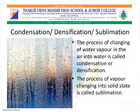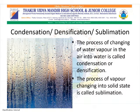Now, sublimation. The process of vapor changing into solid state is called sublimation. It involves direct vaporization and condensation of a solid without formation of an intermediate liquid phase. Sublimation is a specialized change of state when a solid substance skips the liquid phase and moves directly into the gas phase. This occurs because the substance absorbs energy so quickly from the surroundings that melting never occurs.